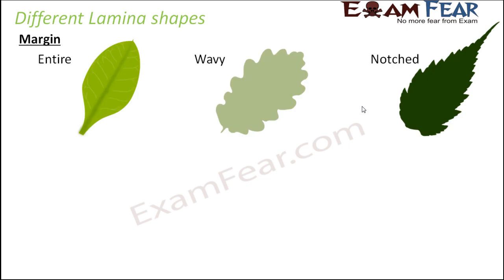The margin of the leaf can be different in different plants. This is the margin of the leaf. The margin could be entire — entire means it is smooth. So that would be an entire margin.